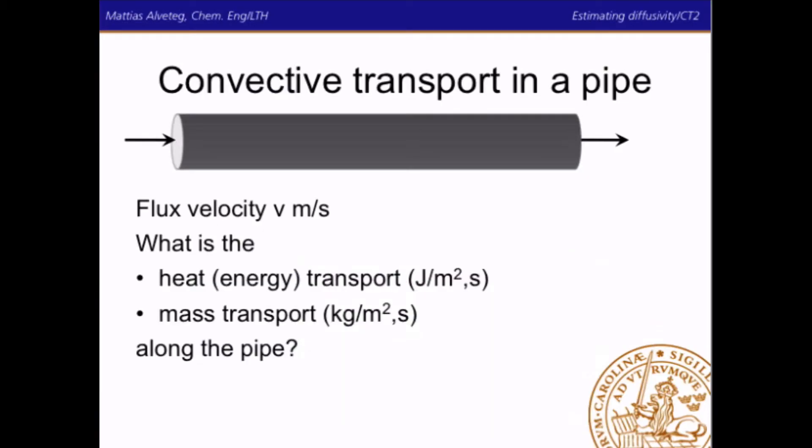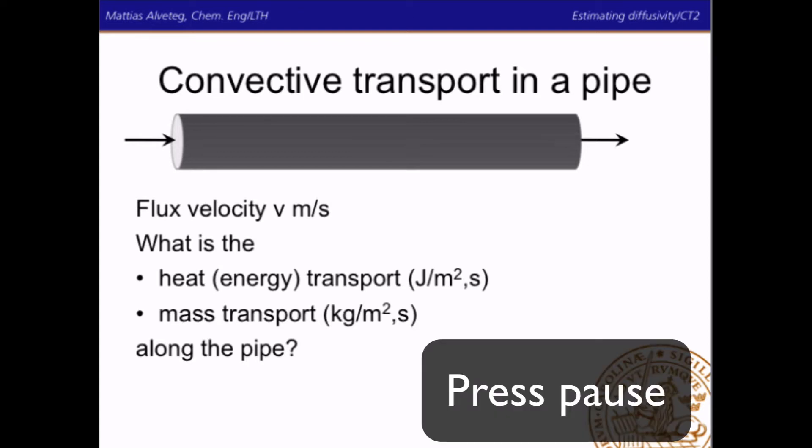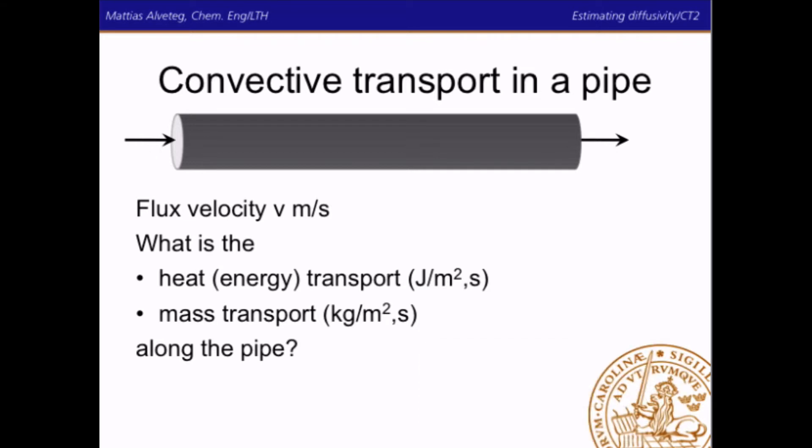So, convective transport, how can we calculate that? Well, if we have a simple pipe and we have a flux velocity meter per second, try to figure out what the heat energy transport is along this pipe and the mass transport. Pause here and try to do it yourself. Okay, I hope you have figured out that the mass transport, we can express that as m dot, so kilogram per second, divided by the area, to get kilogram per square meter a second.